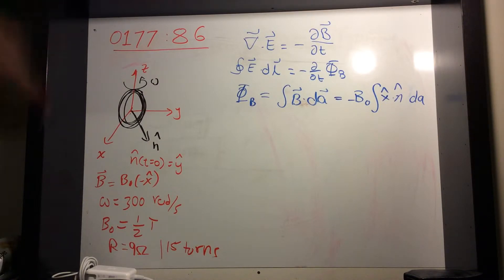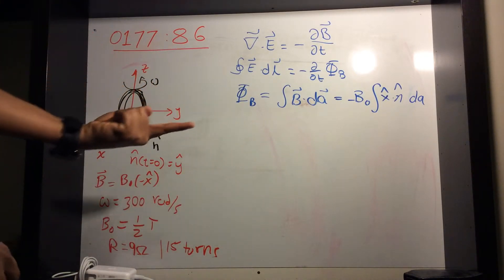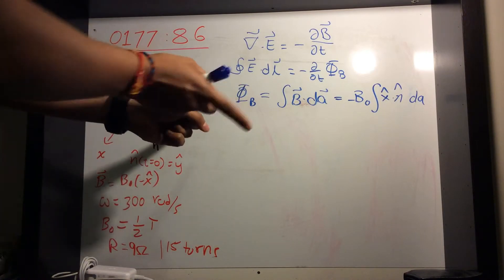Alright, so at time zero, we know that y-hat is coming out of the board and n-hat is that way. But at later times, the angle changes.